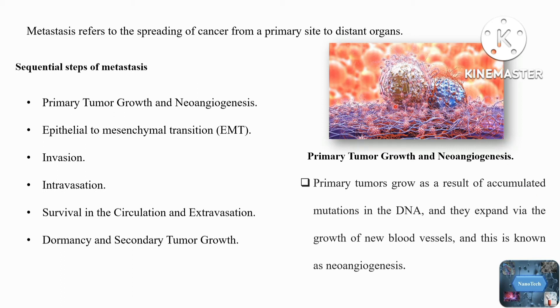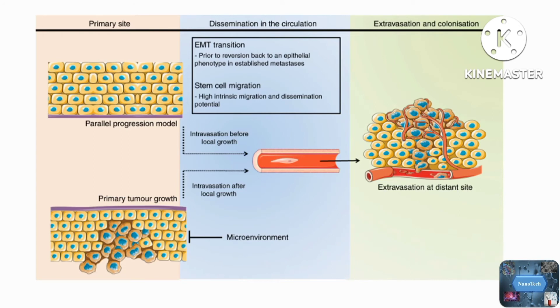The next step is angiogenesis, or neoangiogenesis. A tumor cannot grow to more than a millimeter in size unless it attracts new blood vessels. These new blood vessels provide the growing cancer with nutrients and oxygen, and also provide the cancer cells with a pathway to other sites in the body.